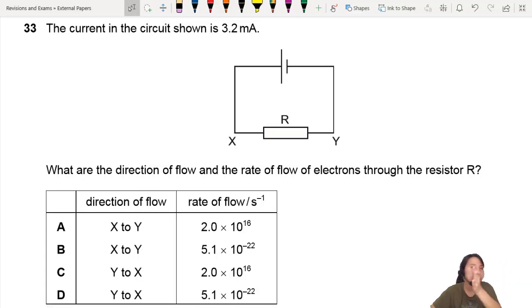The current in the circuit shown is 3.2 milliamps. Let's draw it. Current, we usually draw this direction.